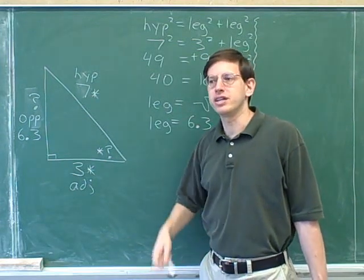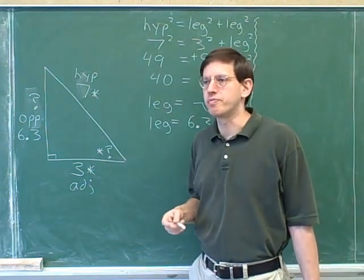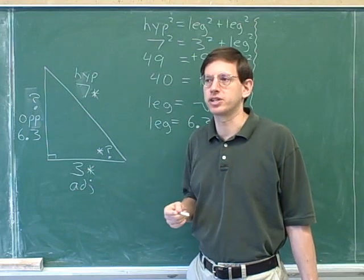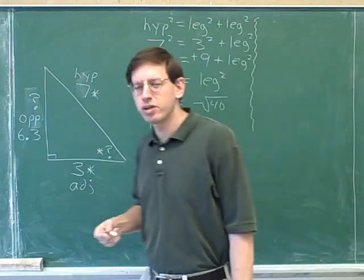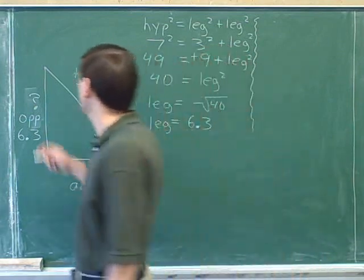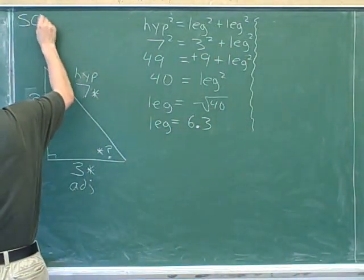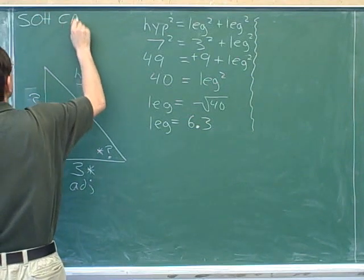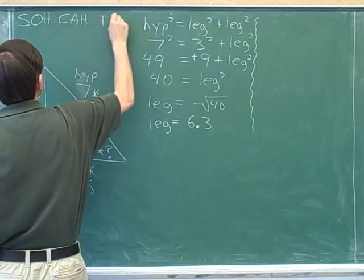Now, to find an angle, we are going to need the trig functions. So we need to remember what's our mnemonic for the trig functions. Remember our mnemonic, SOH-CAH-TOA. So it's probably a good idea when you're learning this material to always write down that mnemonic. SOH-CAH-TOA.